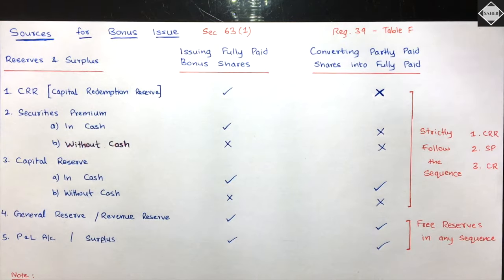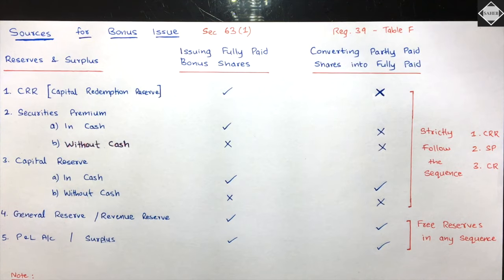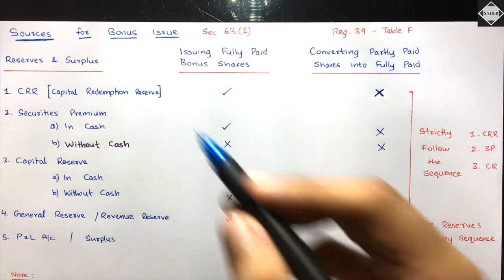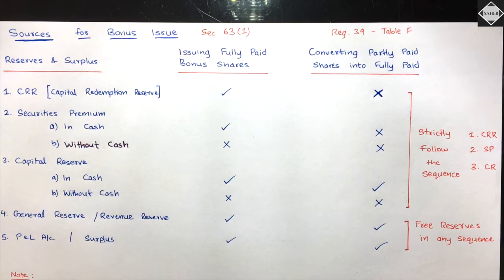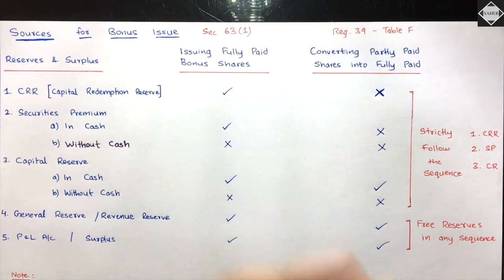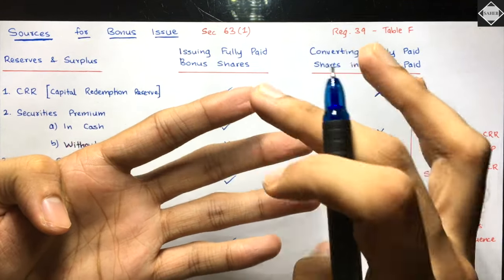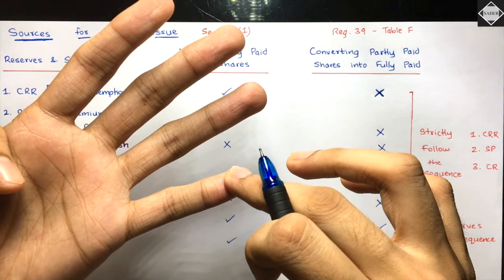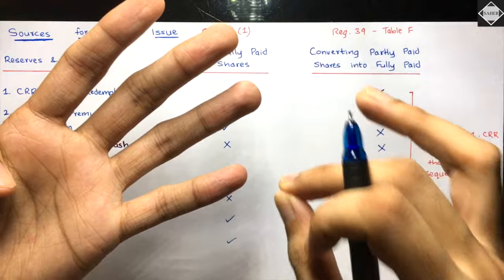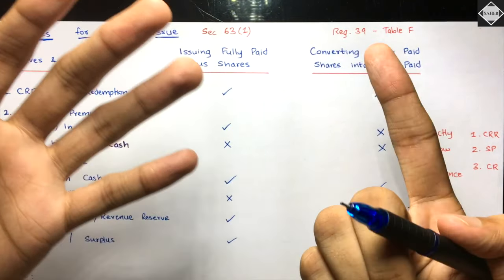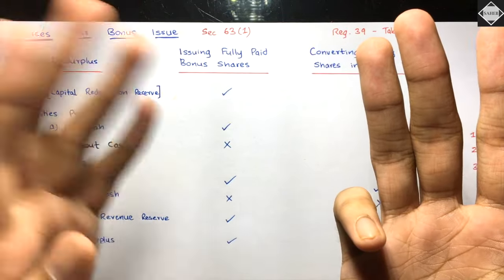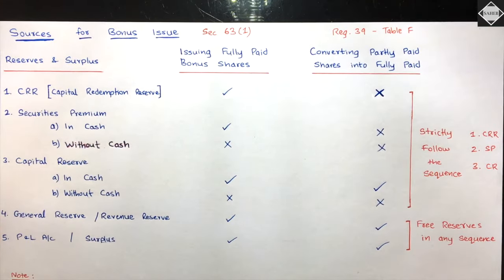The main question is: what are the sources for bonus issue? Bonus issue happens from reserves and surplus - but you need to know which specific reserves you can utilize according to the Companies Act. We mainly have four reserves: CRR (Capital Redemption Reserve), SP (Securities Premium), CR (Capital Reserve), and Free Reserves.